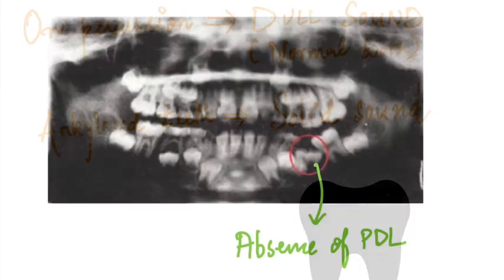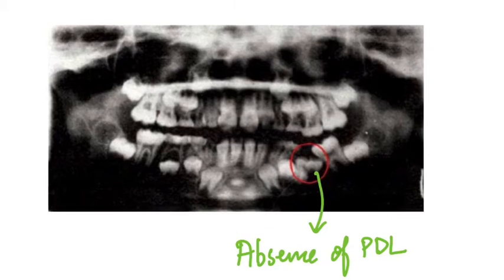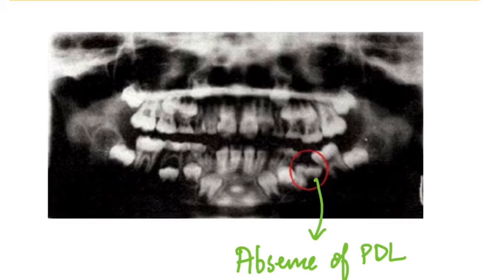Moving on to the radiographic features: in this OPG, the mandibular first molar appears to be ankylosed, as it clearly lies well below the occlusal plane. Also, in such teeth the PDL space is completely absent on the radiograph.